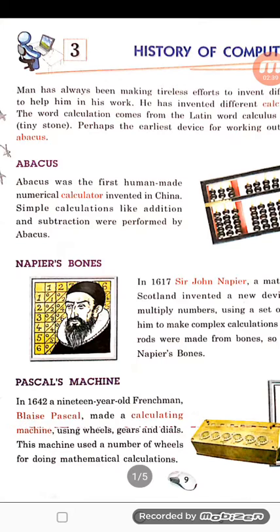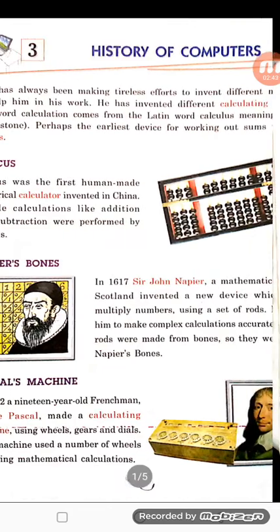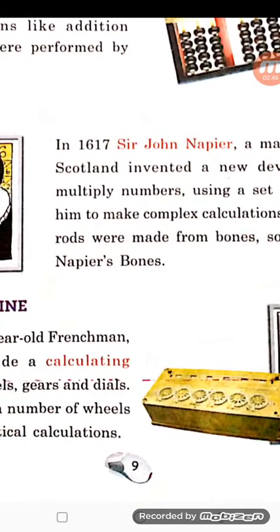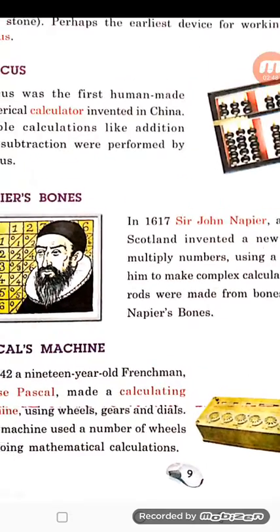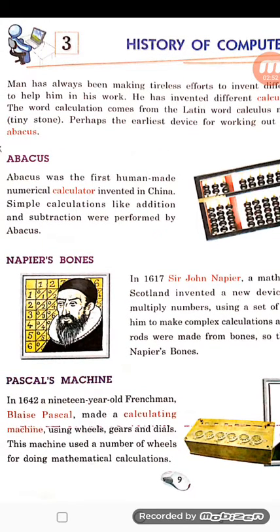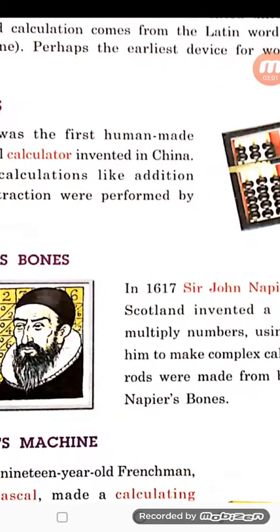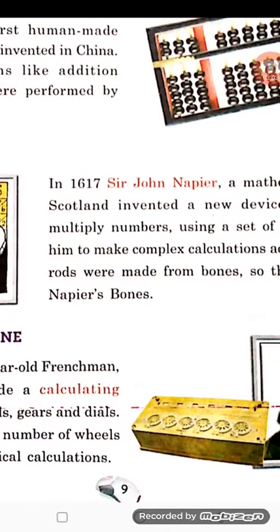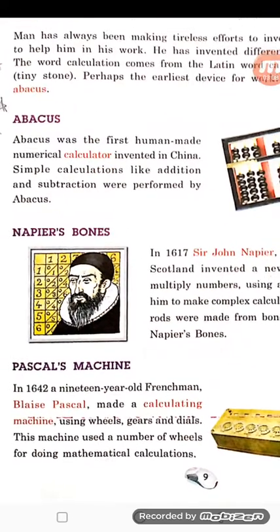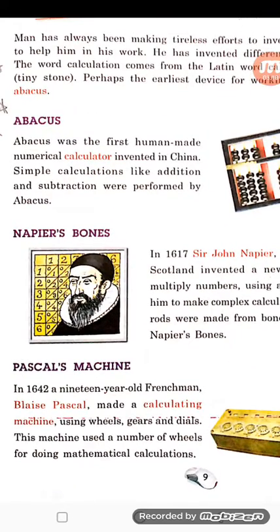Then we studied about Pascal's machine, also called Pascaline. It was invented in 1642 by Blaise Pascal and it was a calculating machine. It contains wheels, gears, and dials — three things included in it. It is used for doing mathematics.